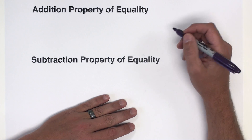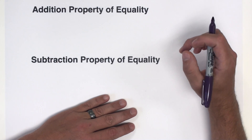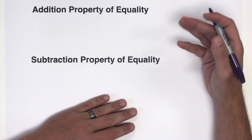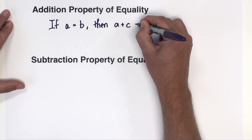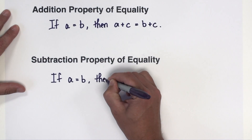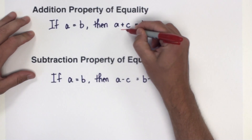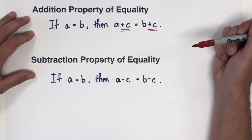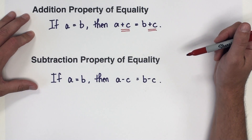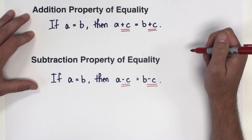The first two properties of equality I want to go over are the addition and subtraction properties of equality. I'm going to begin by writing those properties out and then we'll go over an example of each. The addition property says if a equals b then a plus c is equal to b plus c, so this property allows us to add any real number to both sides of an equation. Likewise the subtraction property of equality allows you to subtract something from both sides of the equation.